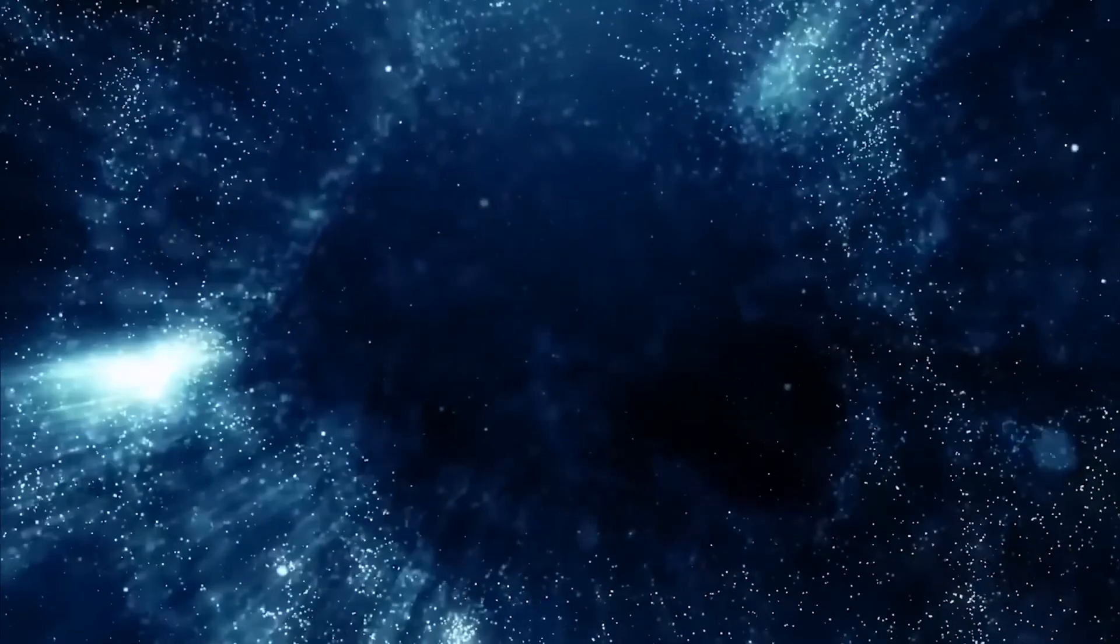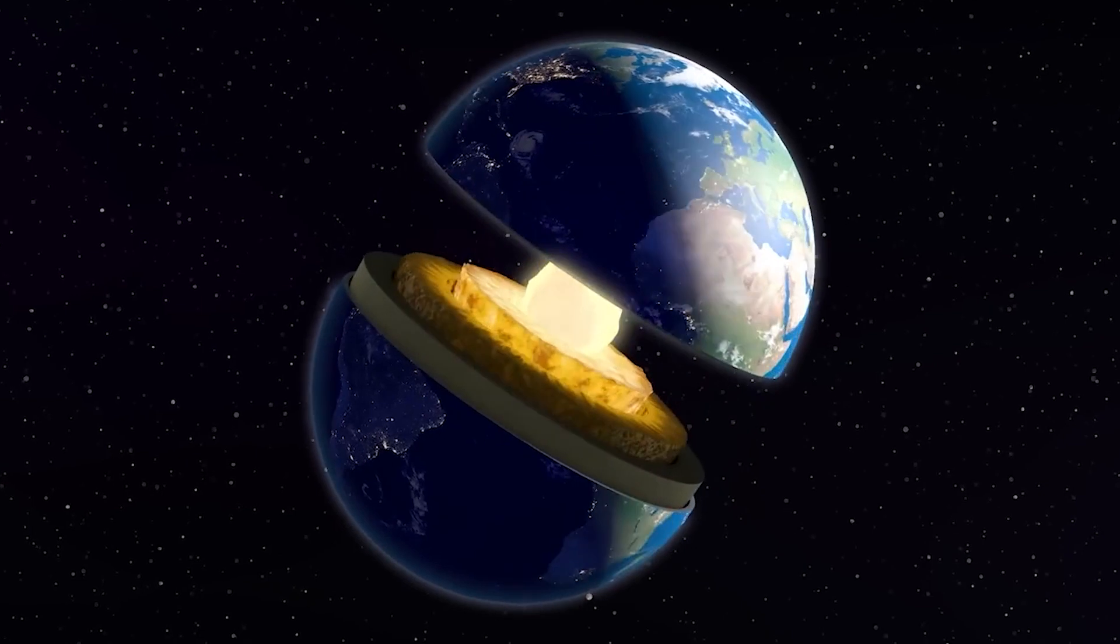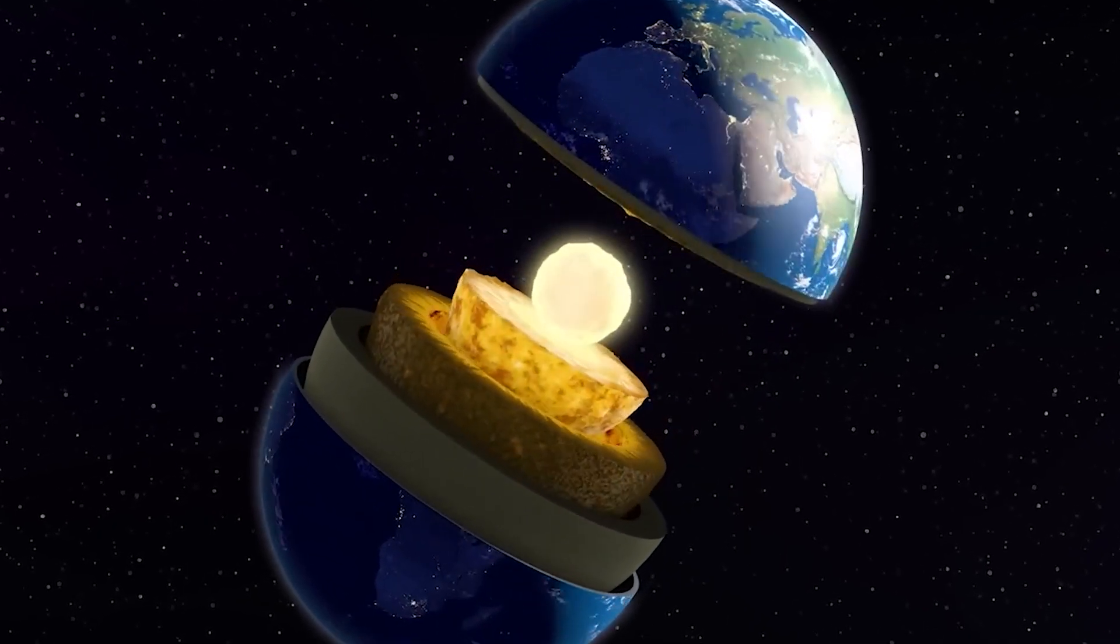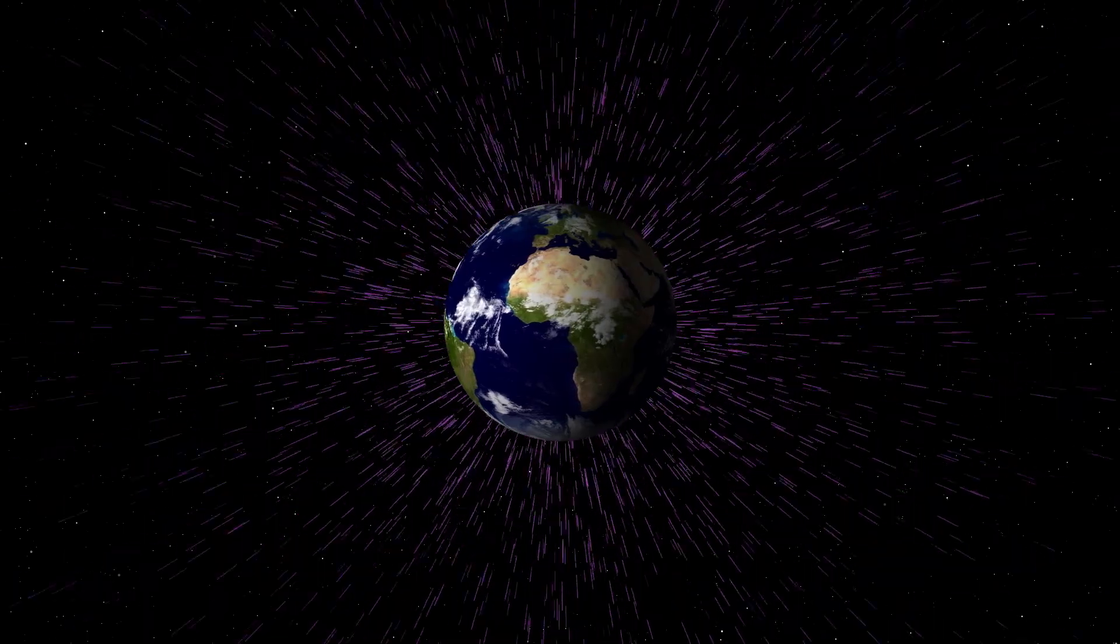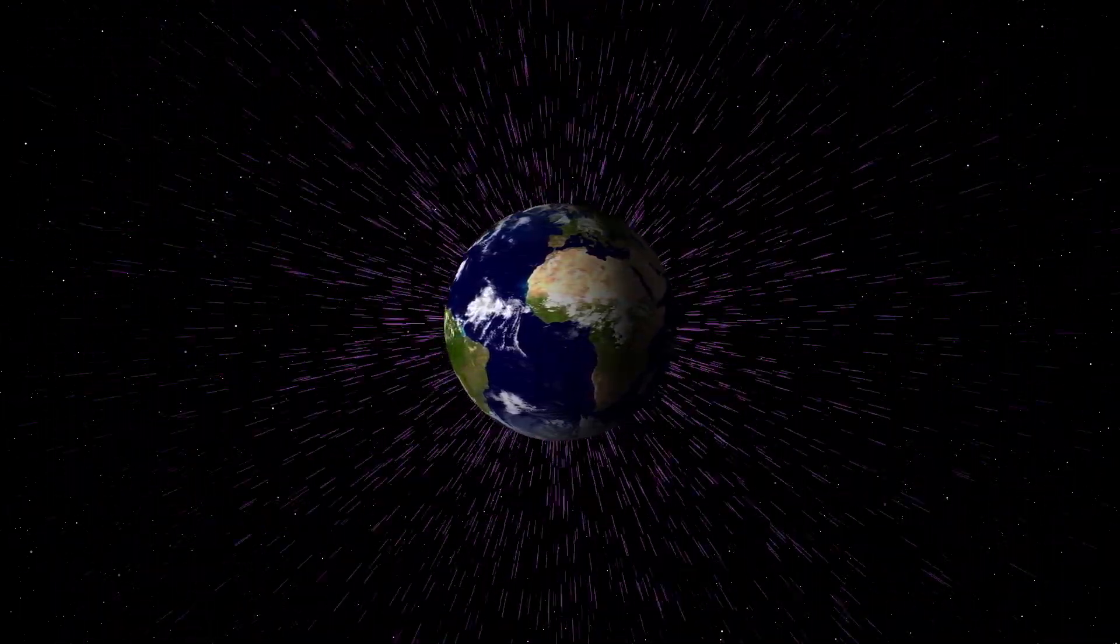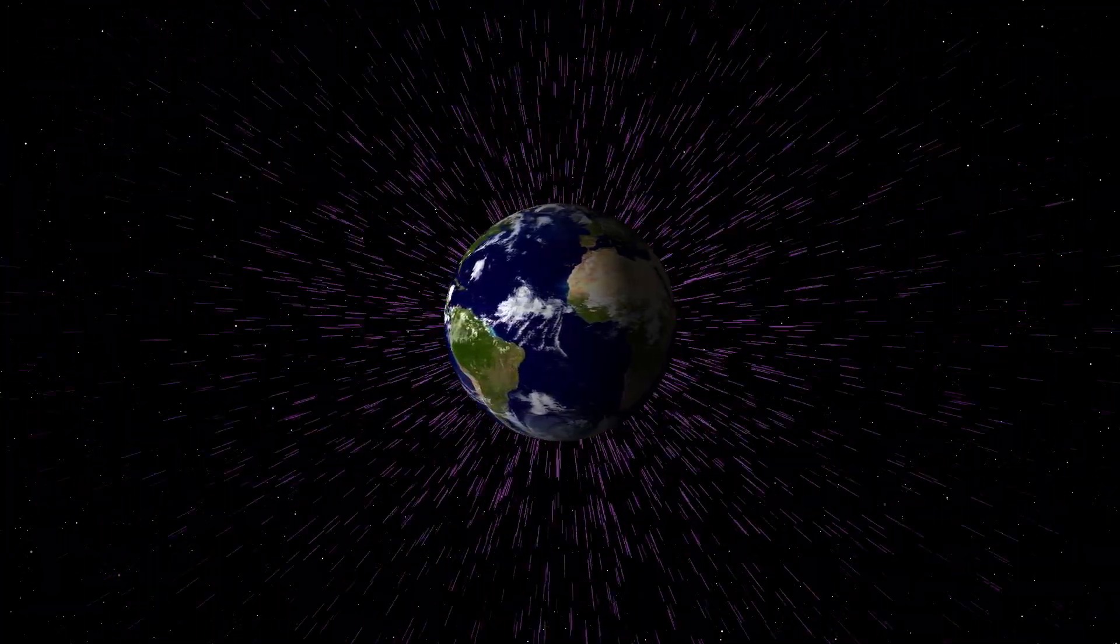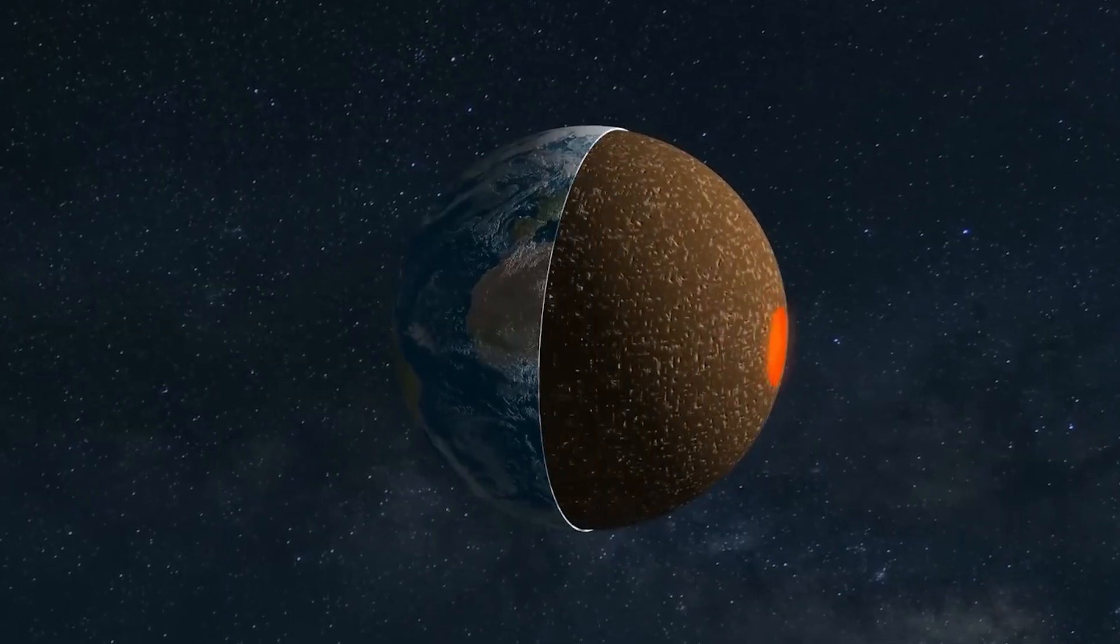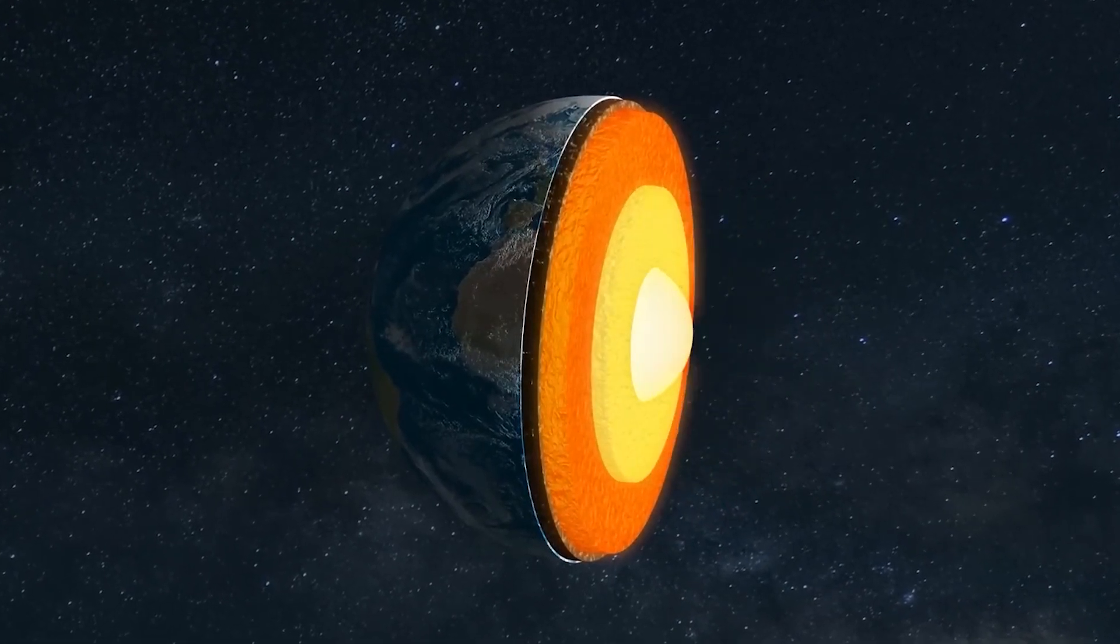Another object hidden from direct observation, which we can study using the neutrino streams it emits, is the Earth's interior, which contains, among other things, many beta-radioactive isotopes that emit neutrinos as they decay. By analyzing neutrino streams, we can determine which beta-radioactive isotopes are present in the Earth's interior, allowing us to more accurately understand the structure and chemical composition of the Earth's mantle and core.